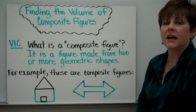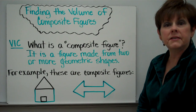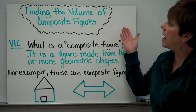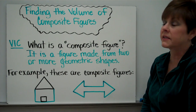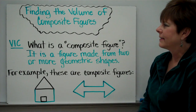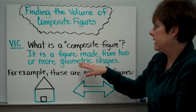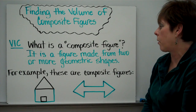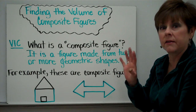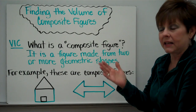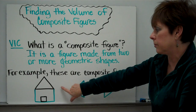Let's begin with tonight's flip video. We are still on the subject of volume, and tonight we are going to be looking at finding the volume of composite figures. First thing, what's a composite figure? It's a figure made from two or more geometric shapes. You see these all the time. They're geometric shapes — they have to have at least two.